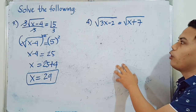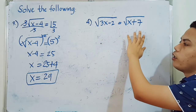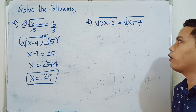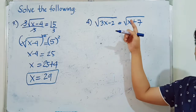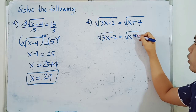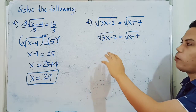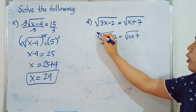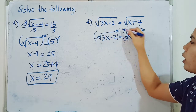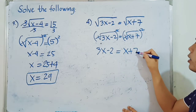For example number 4, we have the square root of 3X minus 2 is equal to the square root of X plus 7. Both sides of the equation have a radical. The process is the same — we get rid of the radical symbol by squaring both sides of the equation, making sure there is only one radical symbol on each side. Squaring both sides cancels the radicals, leaving us with 3X minus 2 is equal to X plus 7.